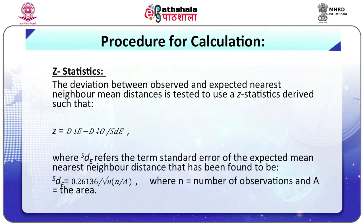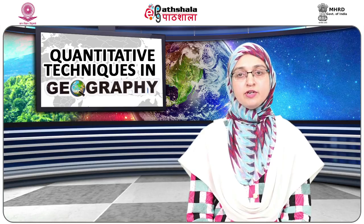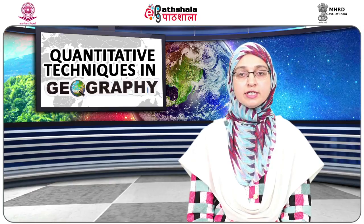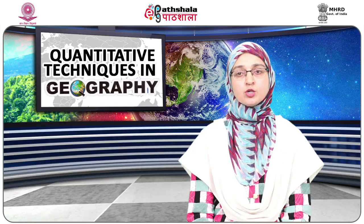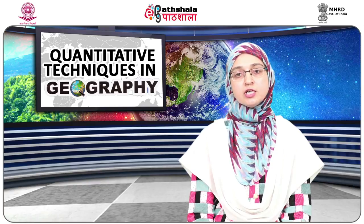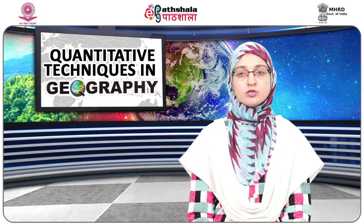Z-statistics: The deviation between observed and expected nearest neighbor mean distances is tested using Z-statistics, where Z = (D̄E − D̄O) / SDE. SDE refers to the standard error of the expected mean nearest neighbor distance: SDE = 0.26136 / (N × √(N/A)), where N is the number of observations and A is the area. Greater the difference between observed and expected average distances, the larger the Z value, indicating greater probability of non-randomness. However, this test requires a large number of points (not less than 100) to test the probability of randomness.